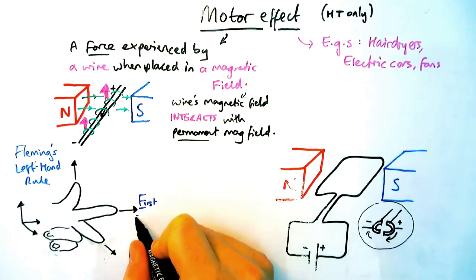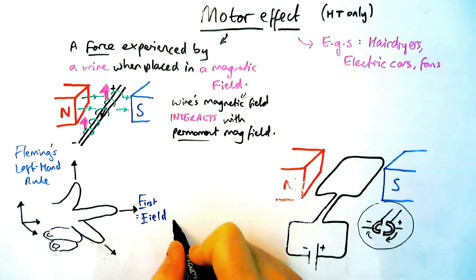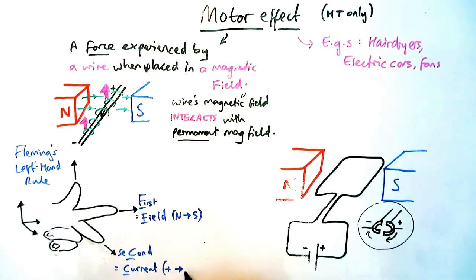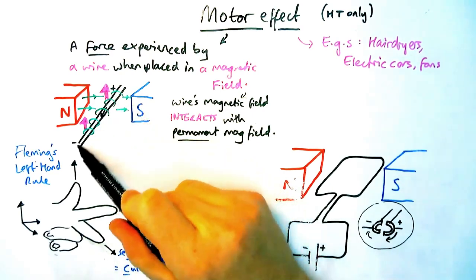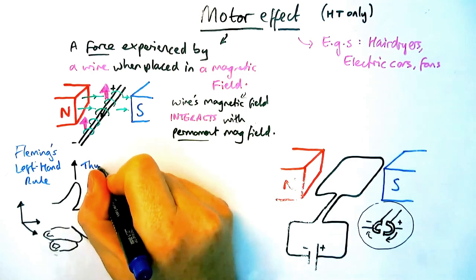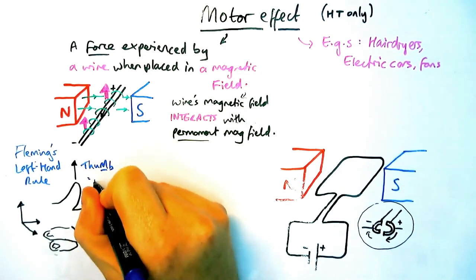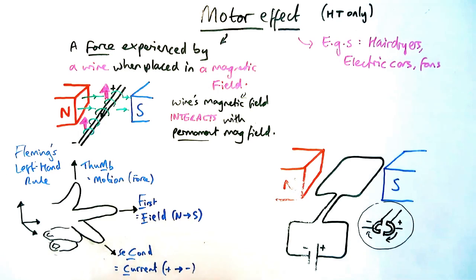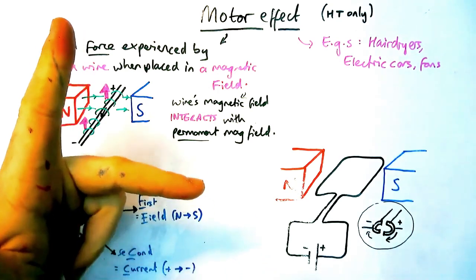The first finger points in the direction of the field so that's going north to south, so in our diagram that's left to right. Our second finger, our middle finger, stands for current which goes from positive to negative so in our diagram that's going towards us. If those two things are aligned in that direction then our thumb will point in the direction that the wire will move in. So for example here your thumb should be pointing upwards, therefore indicating the wire is going to go upwards.